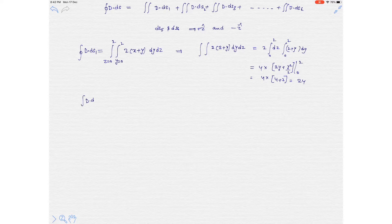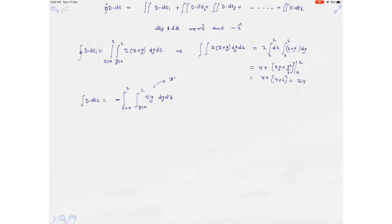Similarly, D·ds2 uses the same integral limits 0 to 2 for both y and z, but with a negative sign. This surface is located at x equals 0, so substituting gives the x-component as 2y.